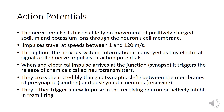Let us see about action potentials. The nerve impulse is based on the movement of positively charged sodium and potassium ions through the neuron's cell membrane. Impulses travel at speeds between 1 and 120 meters per second. Throughout the nervous system, information is conveyed as tiny electrical signals called nerve impulses or action potentials. When an electrical impulse arrives at a junction,